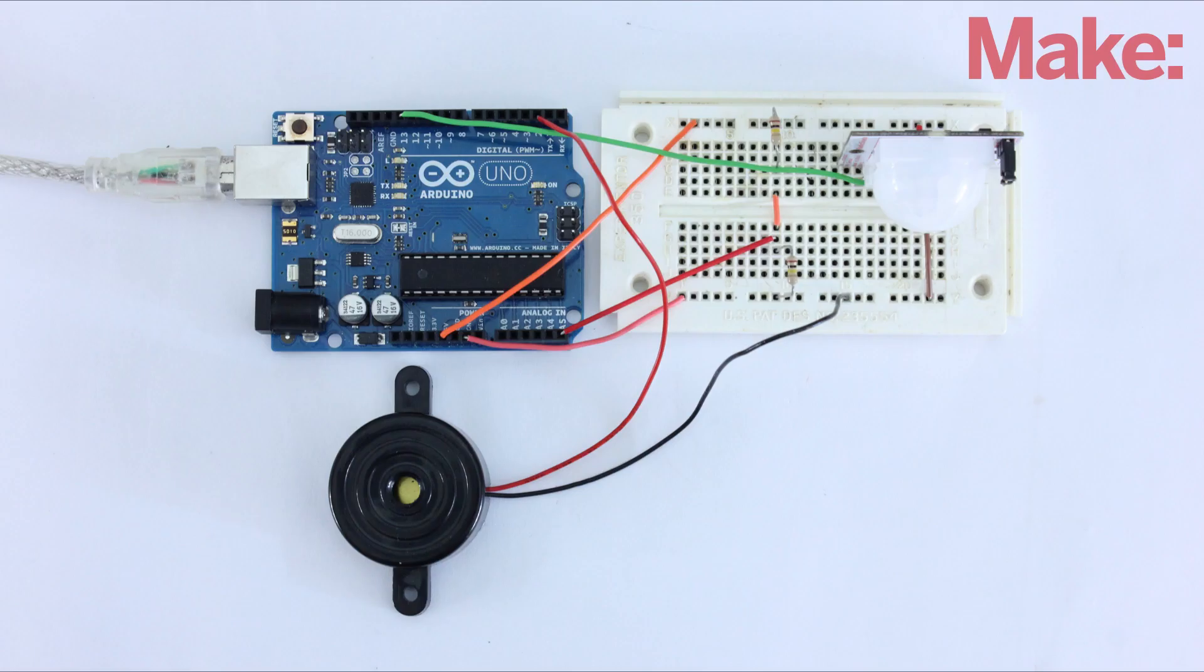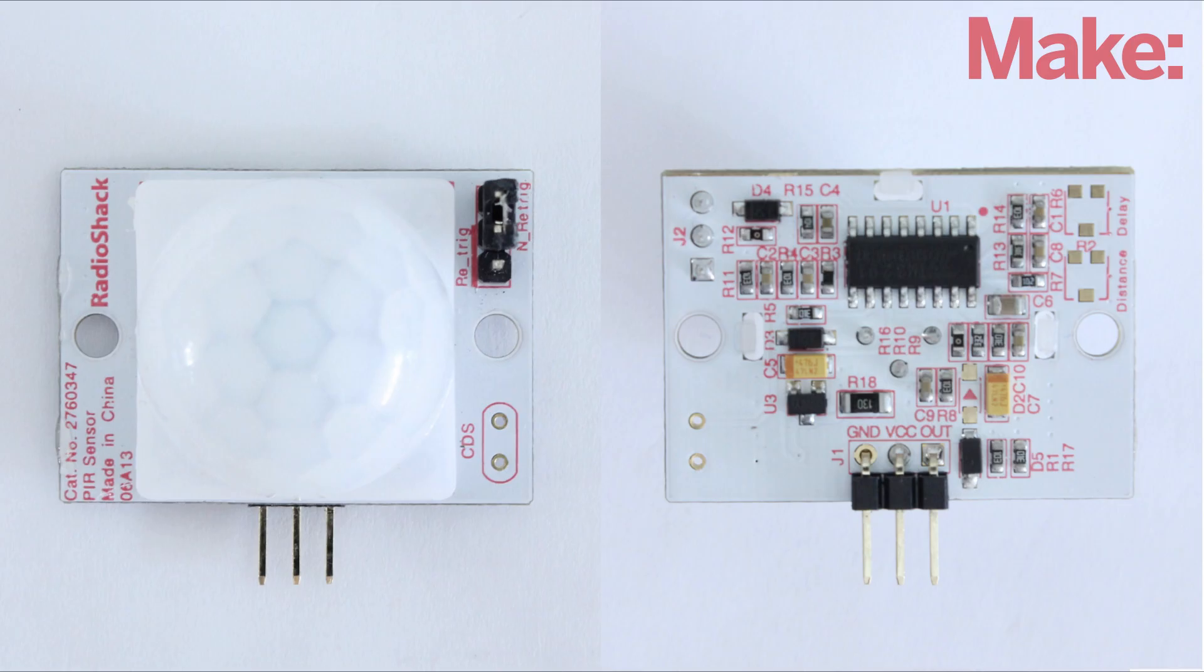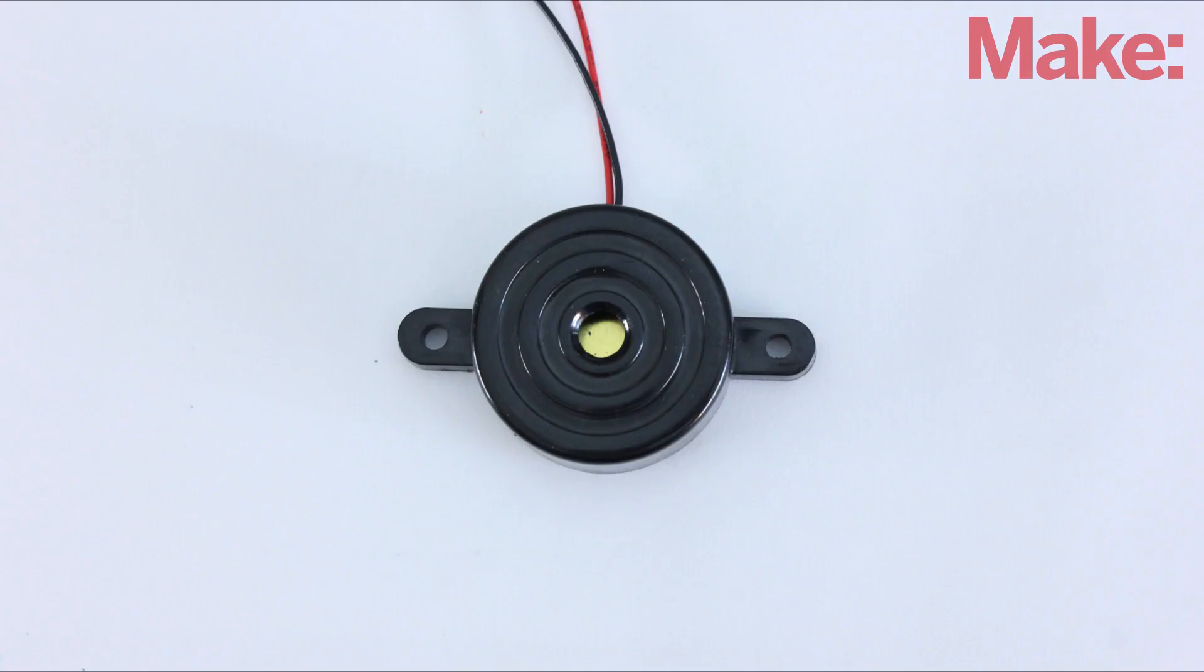The easiest way to do this is with a prototyping breadboard. The motion sensor needs to be connected to ground, 5 volts, and digital pin 13. The piezo buzzer is connected to ground and digital pin 2.